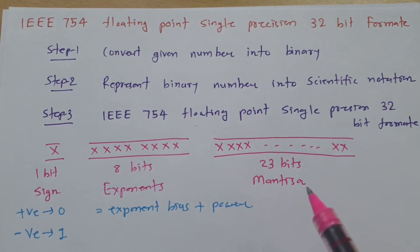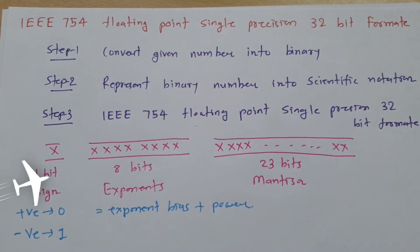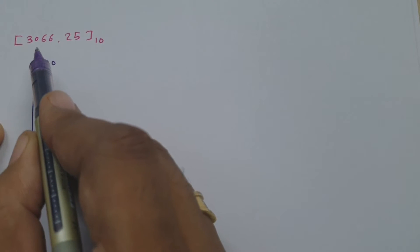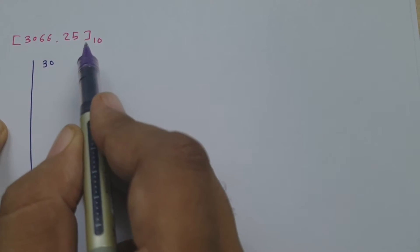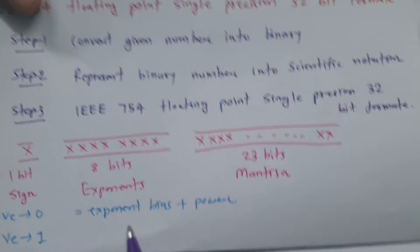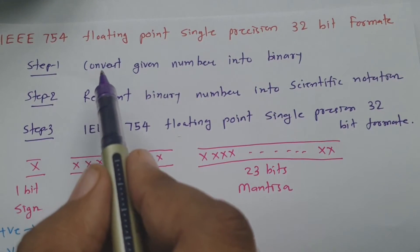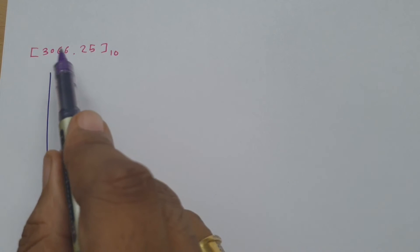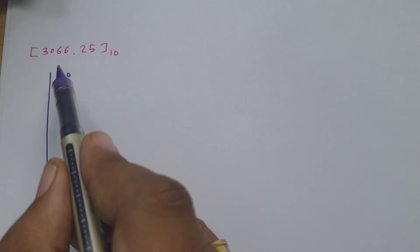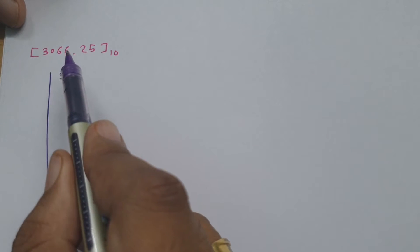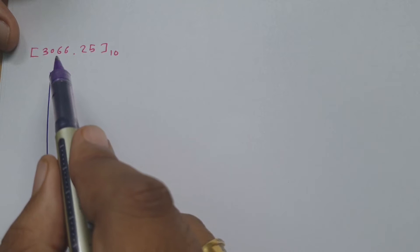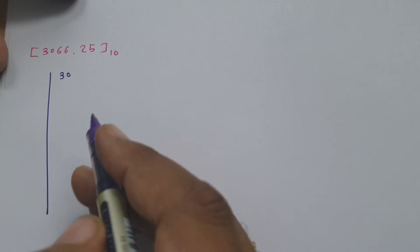To understand this, let us work through an example with the number 3066.25 (base 10). As I mentioned, we first need to convert this into binary. I have split this number into two parts: 3066 (integer part) and 0.25 (fractional part). Let us convert 3066 into binary first.